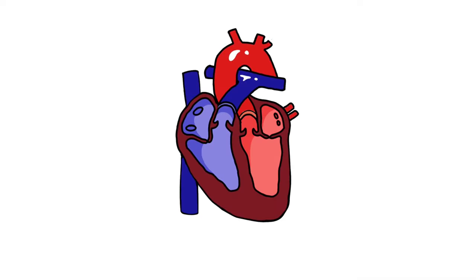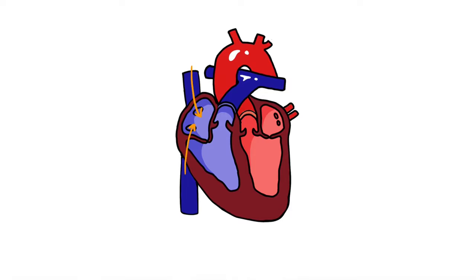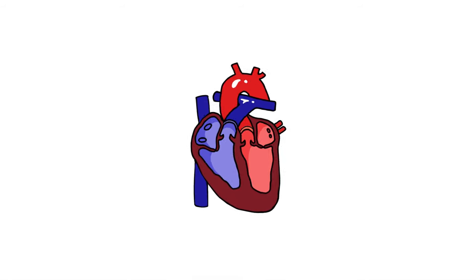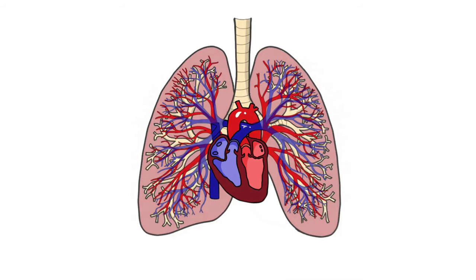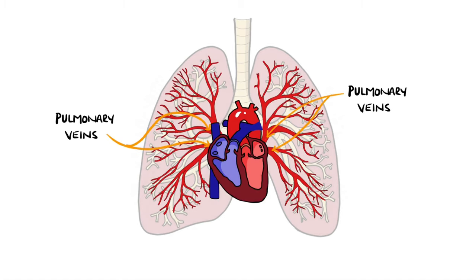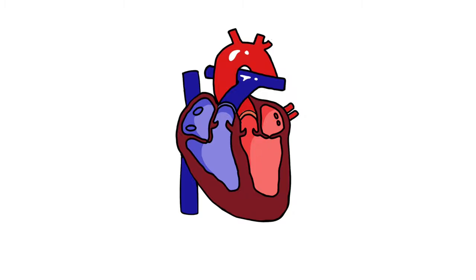If we look at the anatomy of the circulation, we see that in normal circumstances, blood returns from the body via the venous system into the right atrium, then passes into the right ventricle and is pumped into the lungs via the pulmonary artery. Here the blood is oxygenated and returns to the left atrium via the pulmonary veins, then into the left ventricle from where it is pumped into the aorta and around the body.